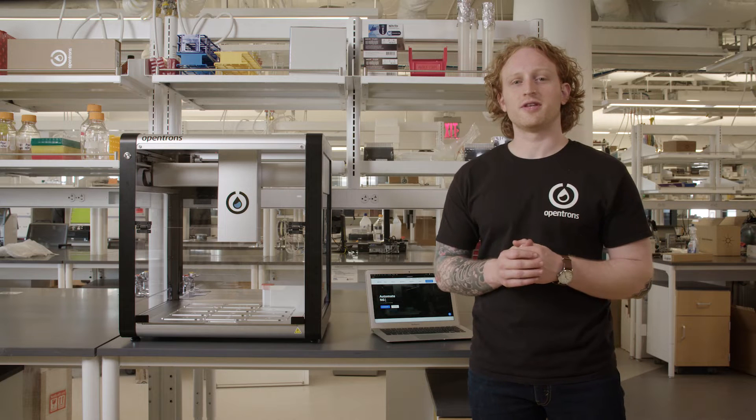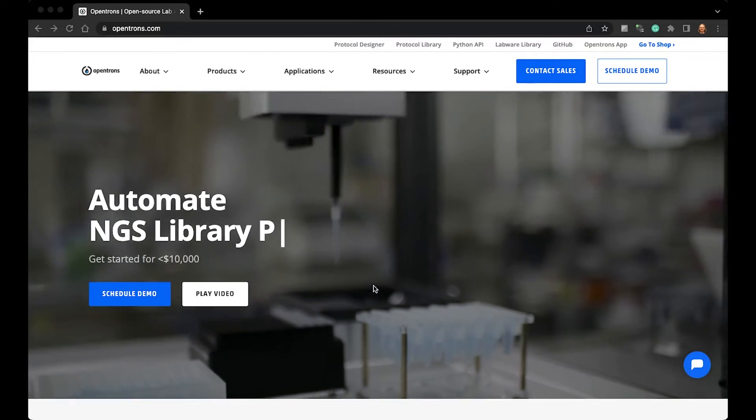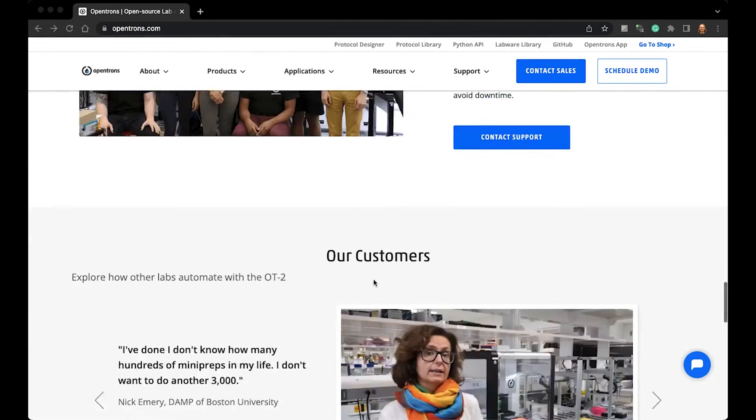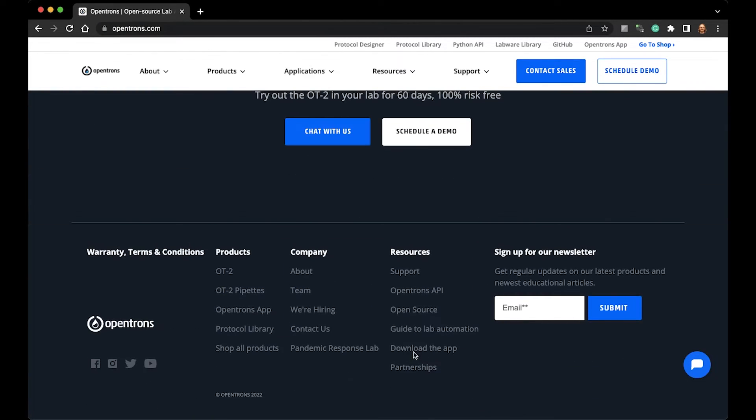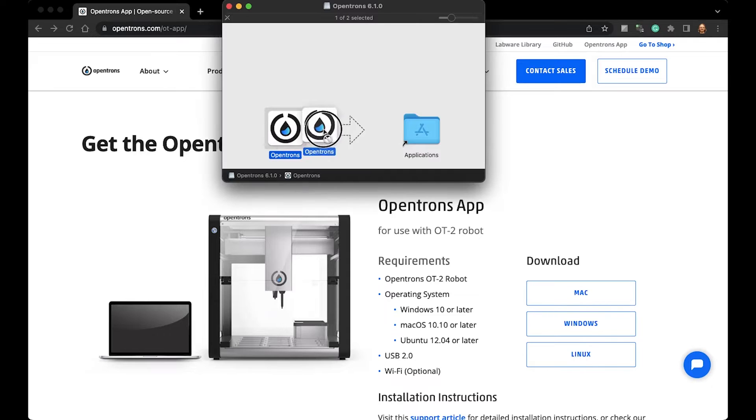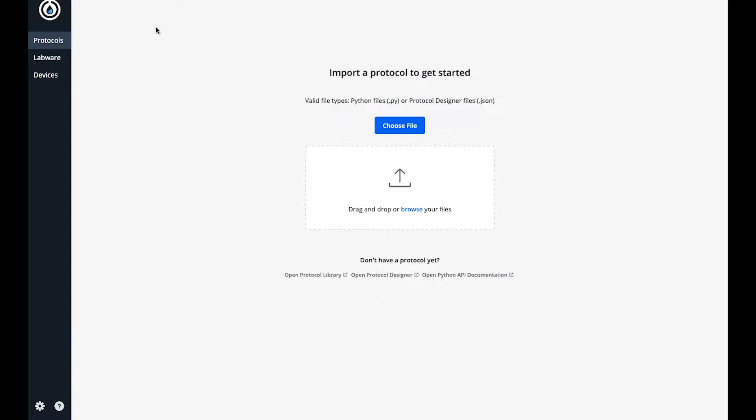Let's get started downloading the app. The OpenTRONS app can be found on the OpenTRONS website. I will scroll down to where it says download the app. I will download the OS-specific app to my computer and then follow the on-screen instructions to install the app. Once the app is installed, I can then open it.